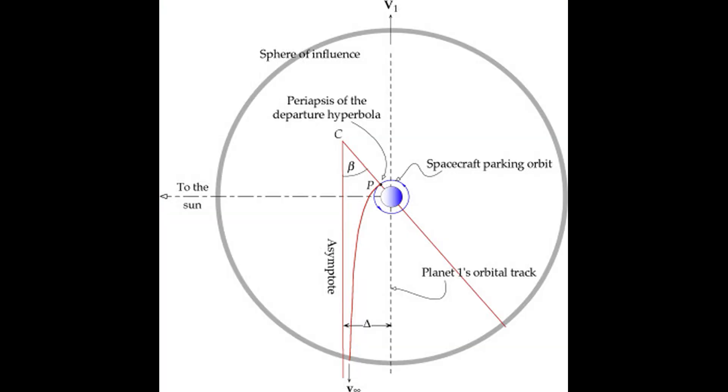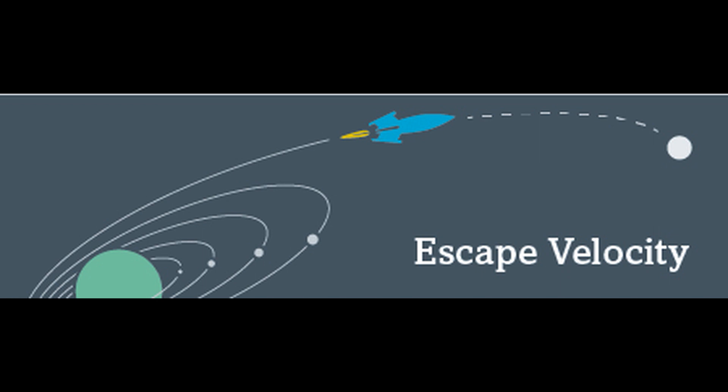The area around the planet that has the maximum gravitational pull is called the sphere of influence of that planet, and the velocity required to escape this is called the escape velocity.